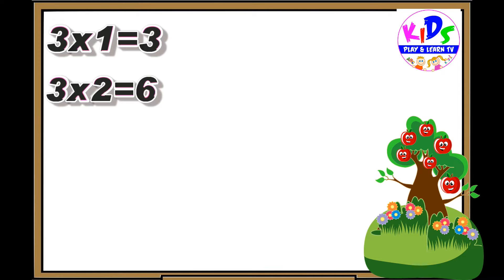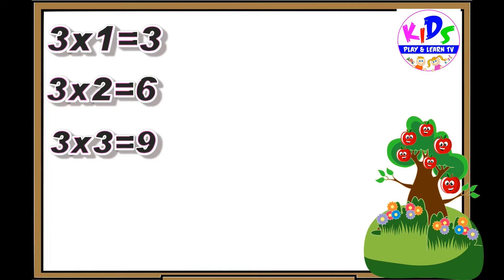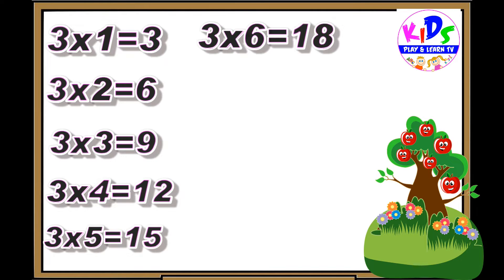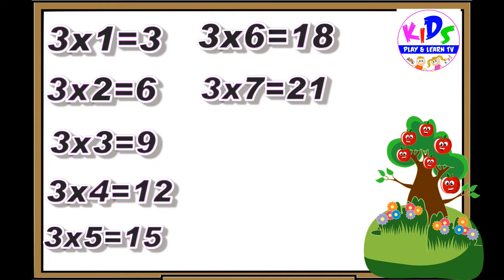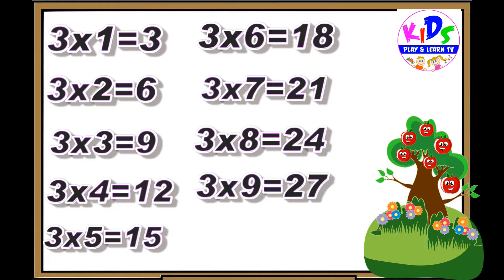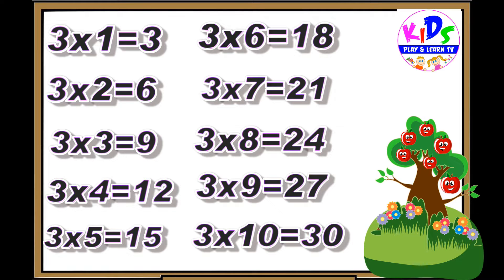Hey kids, let's repeat. Three ones are three. Three twos are six. Three threes are nine. Three fours are twelve. Three fives are fifteen. Three sixes are eighteen. Three sevens are twenty-one. Three eights are twenty-four. Three nines are twenty-seven.